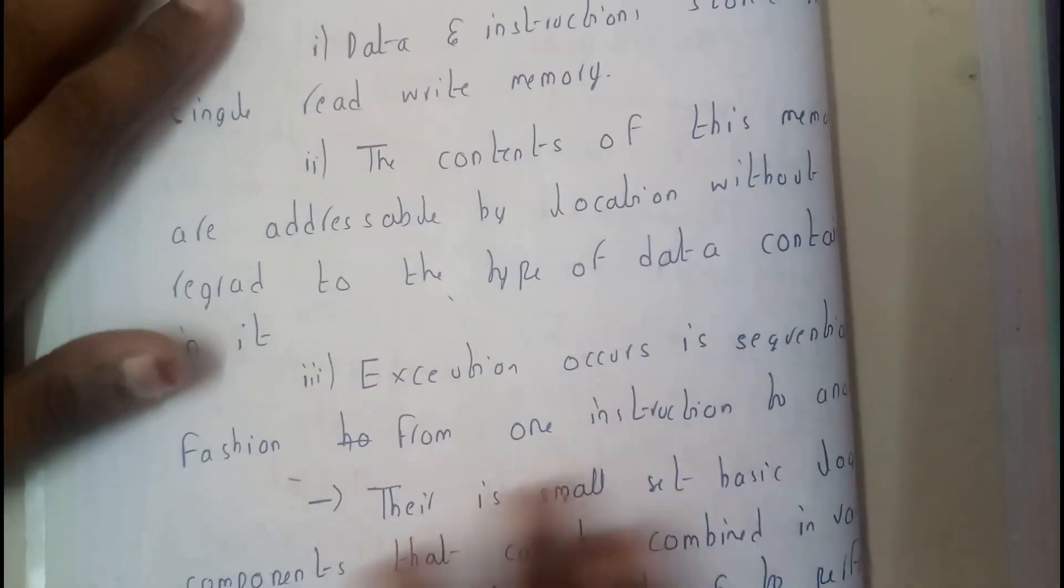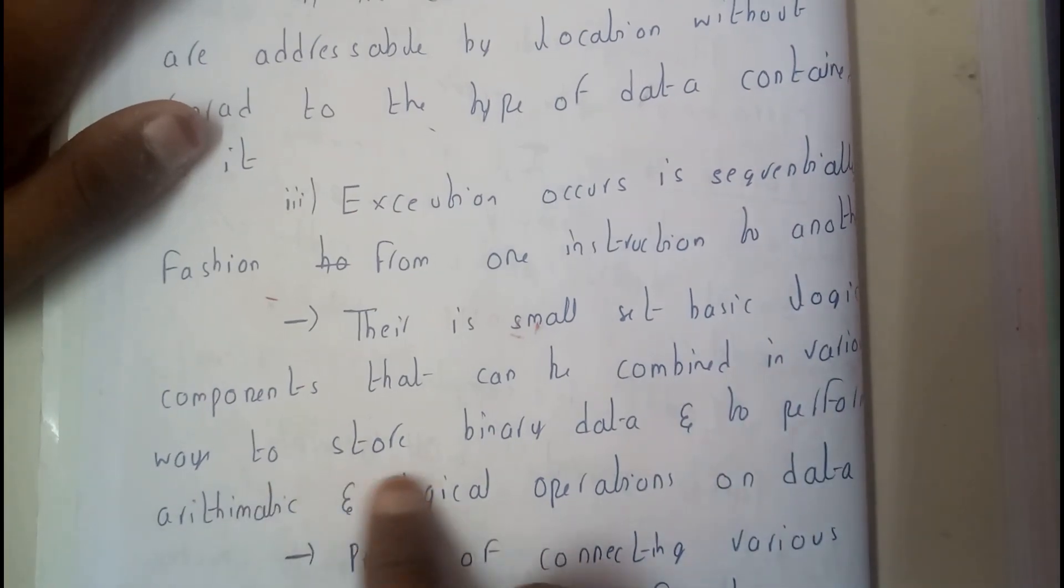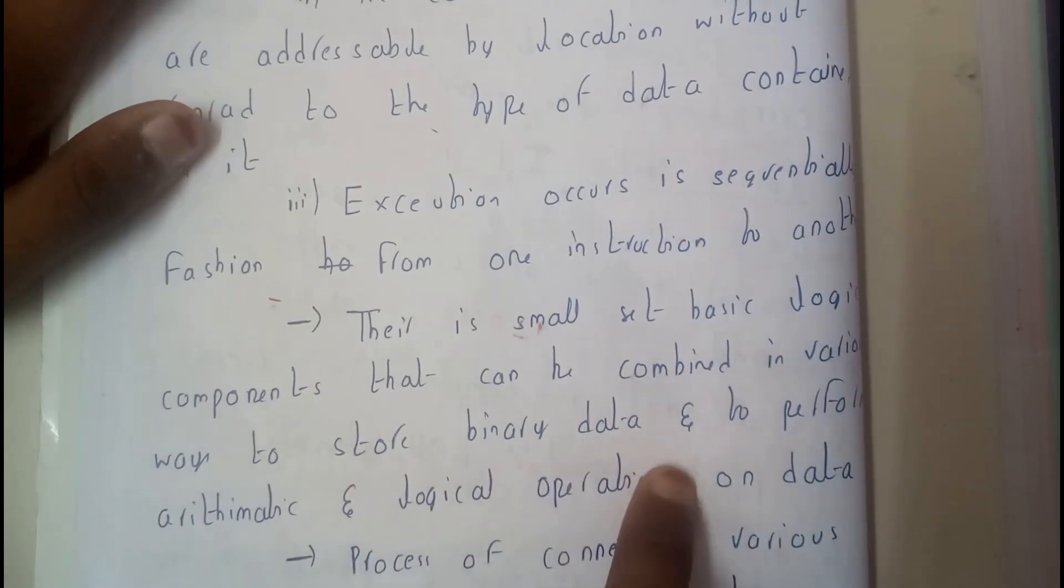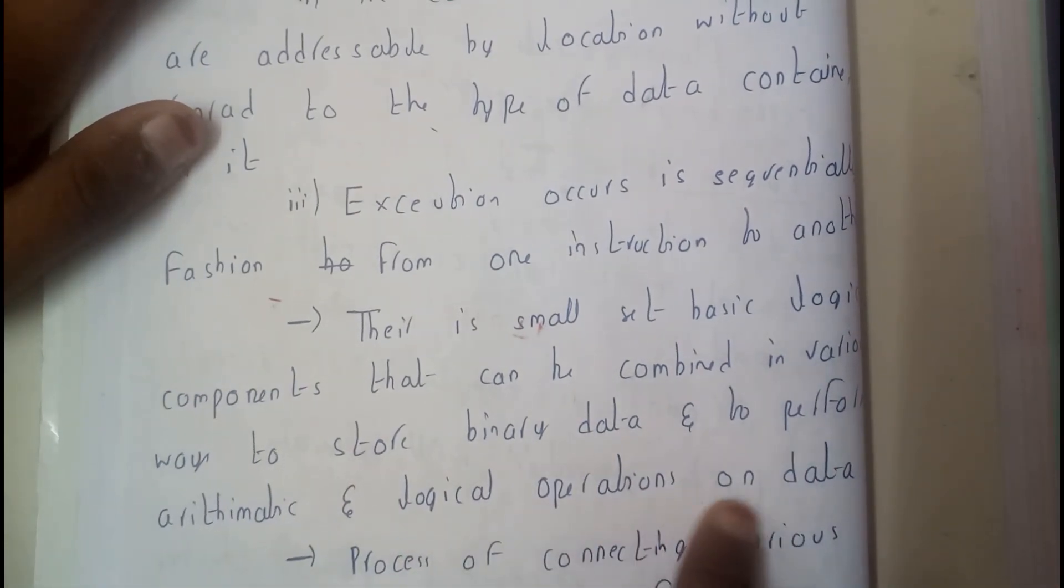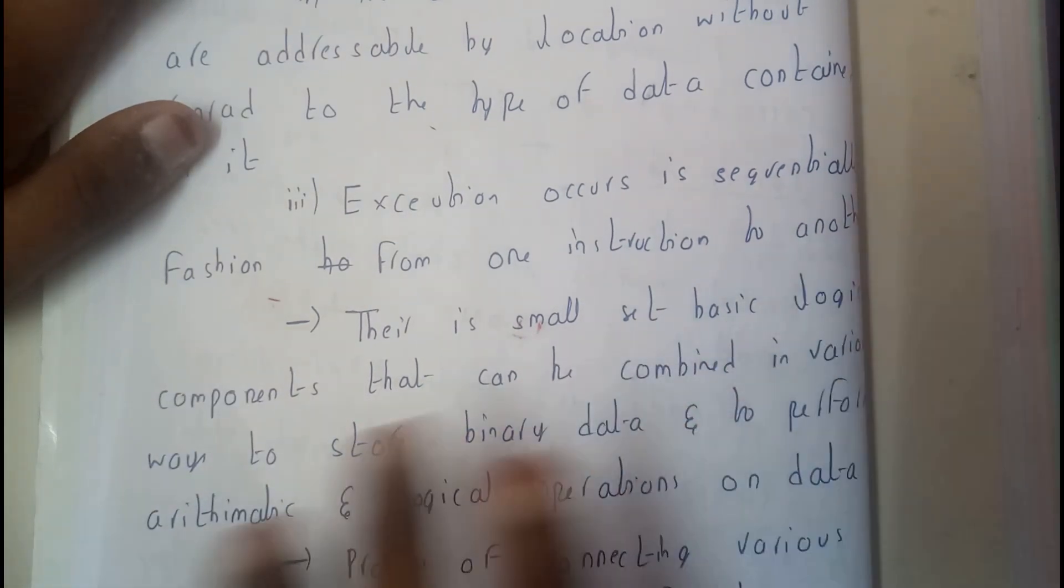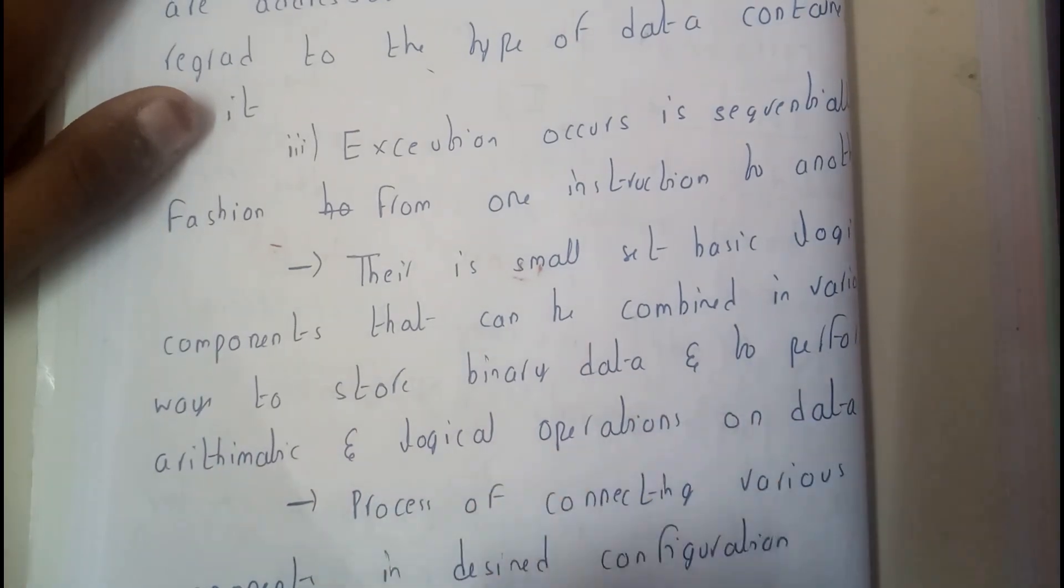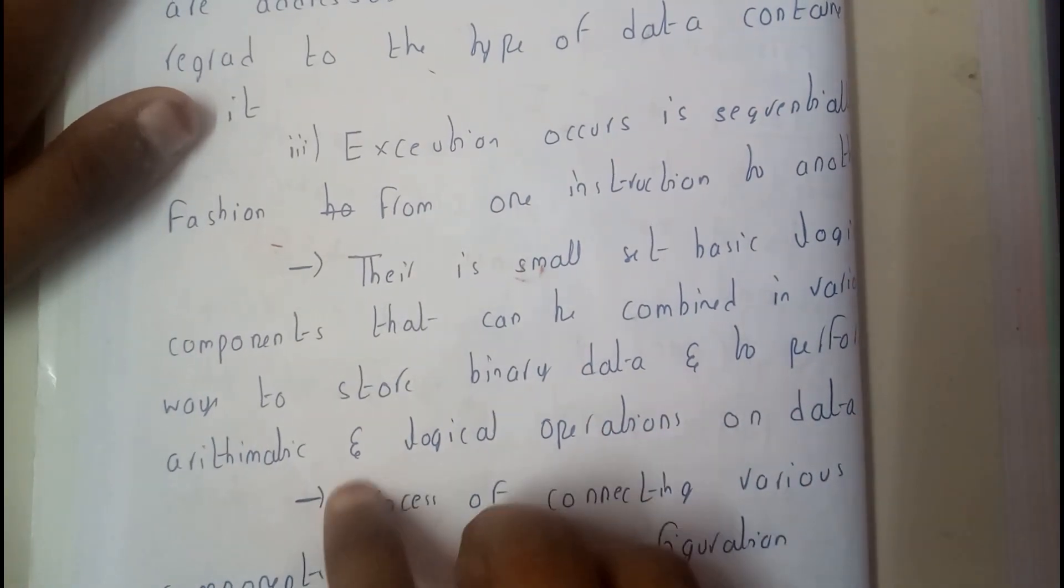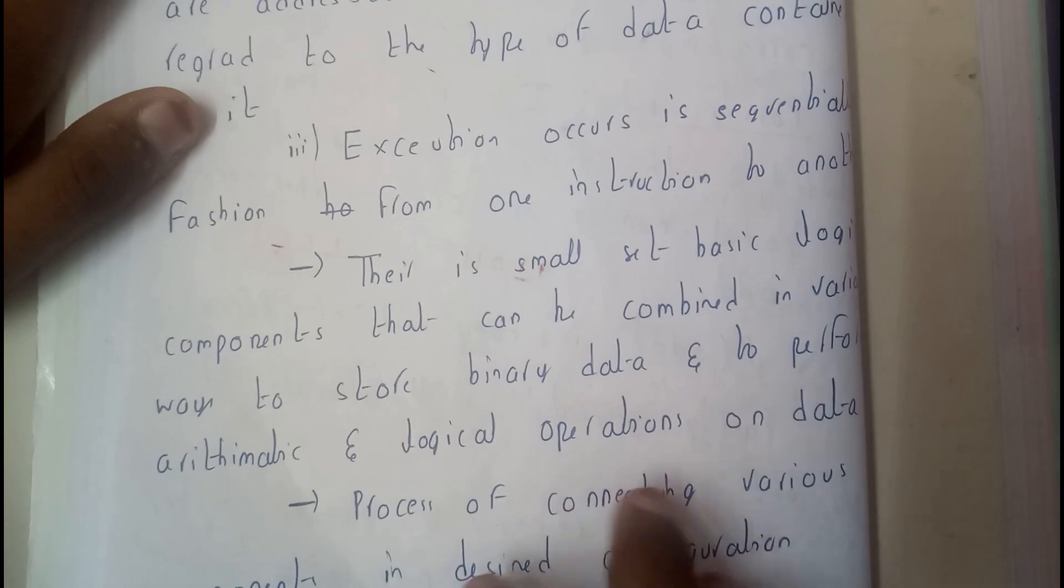There is a simple set of basic logic components that can be combined in various ways to store binary data, to perform arithmetic and logic operations on data. When we connect all these devices, small sets of logical components, we can do many operations. So basically ALU consists of different components.